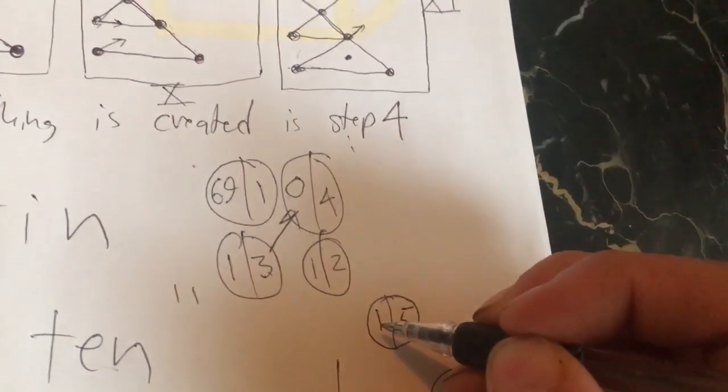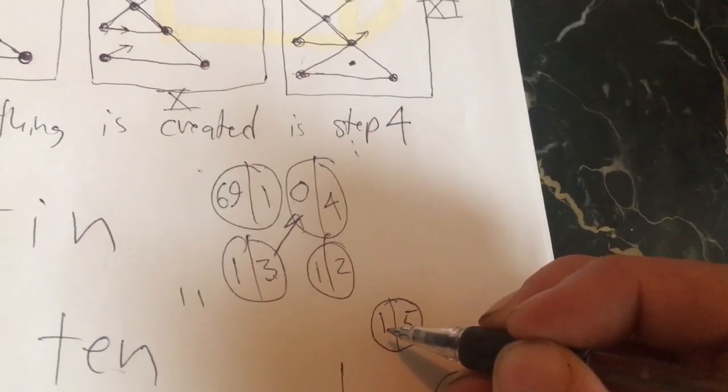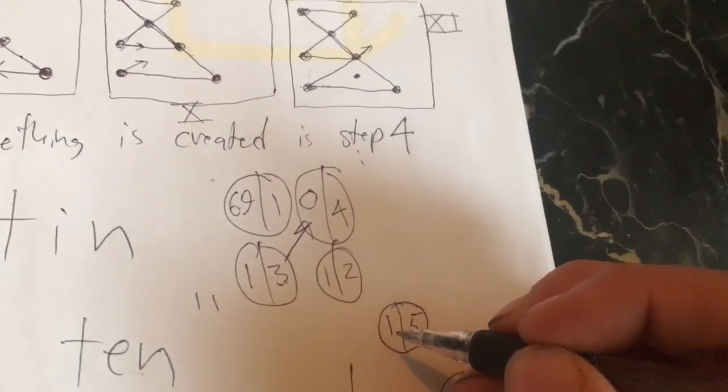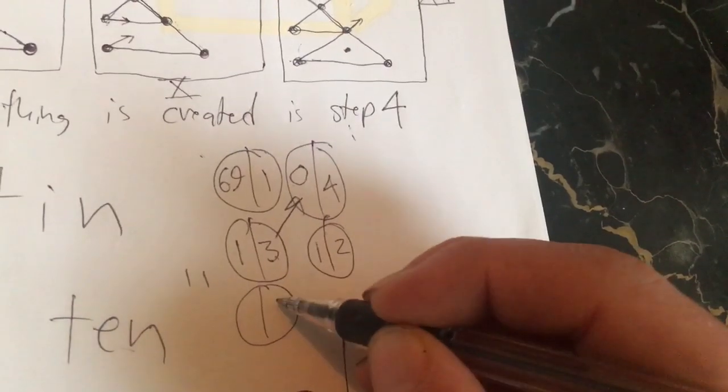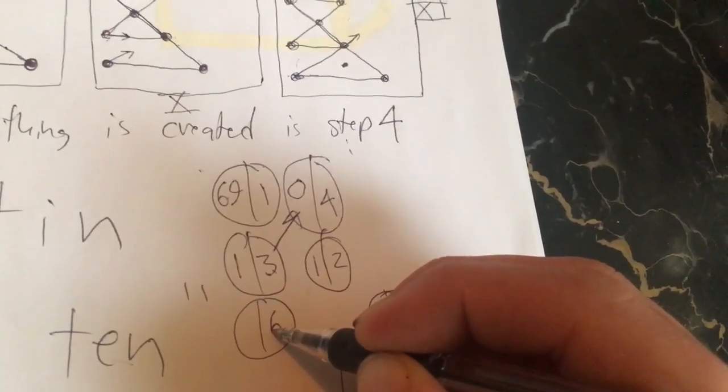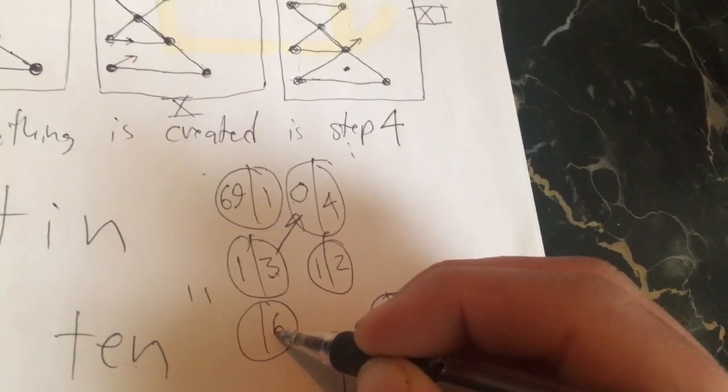It's the fifth thing created and it's the value of one, Neptune. And this guy over here will be the sixth thing created, Tatiana.